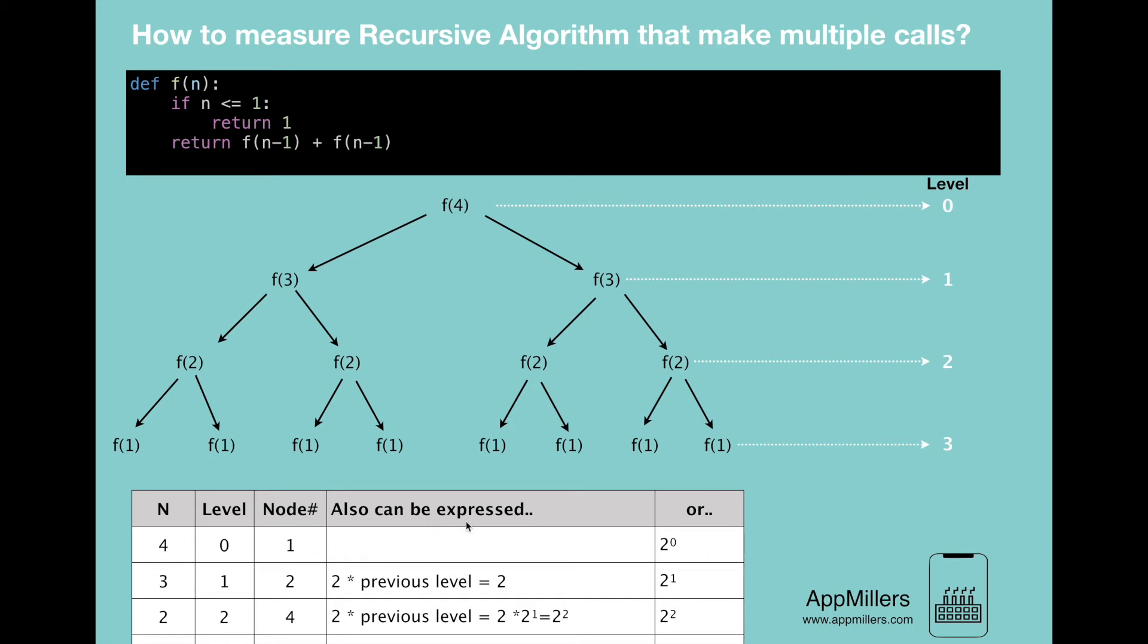As you see in this table, if we sum up these levels, we will get 15, which is the number of calls we count.